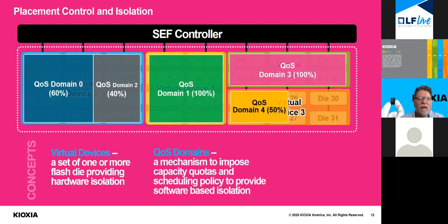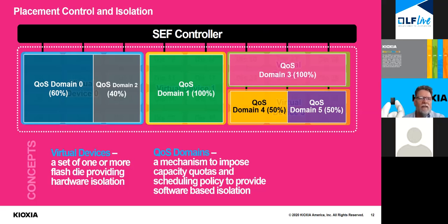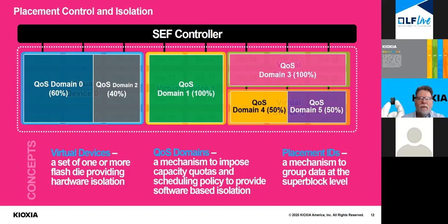The next concept is a quality of service domain, or QoS domain — a mechanism that allows imposing capacity quotas, scheduling policy, and software-based isolation. Unlike virtual devices, you can have QoS domains that share a single virtual device. In this example, QoS domain 0 and QoS domain 2 are sharing virtual device 0; likewise, QoS domain 4 and QoS domain 5 are also sharing a virtual device. The final concept is a placement ID — a mechanism that allows grouping data at the superblock level within a QoS domain.